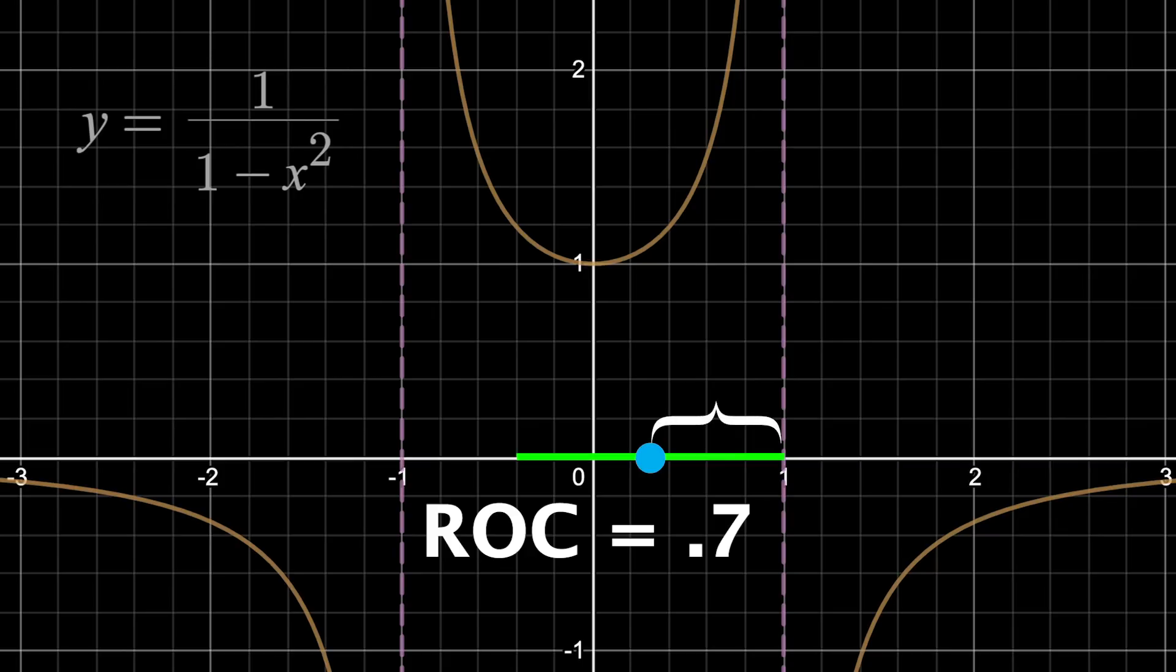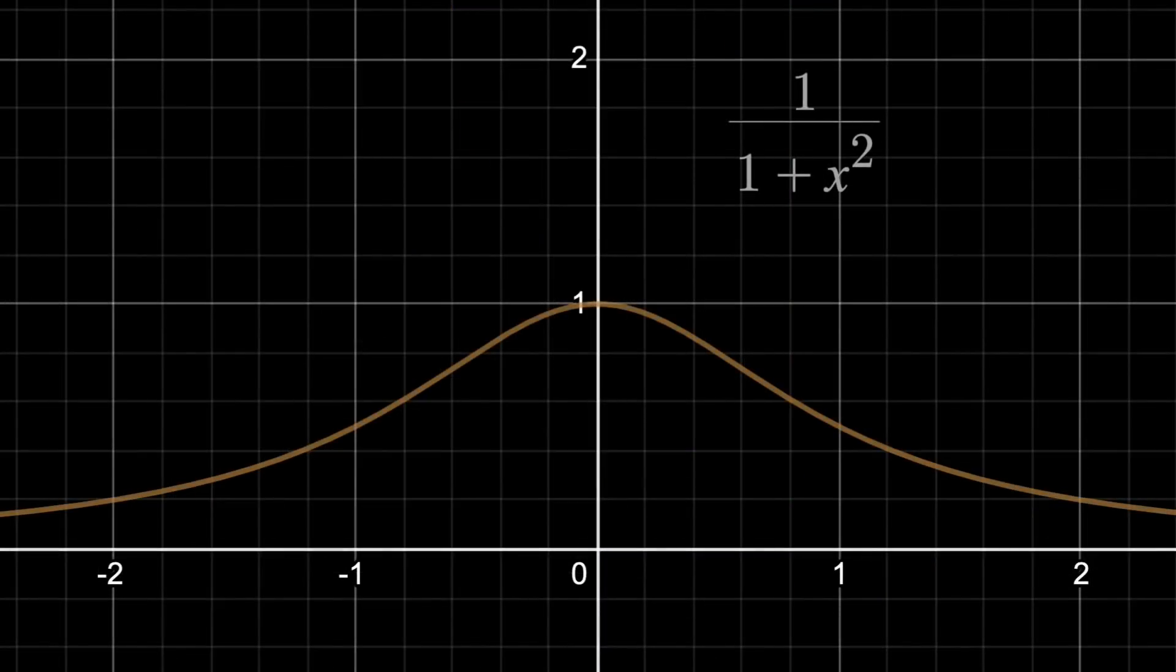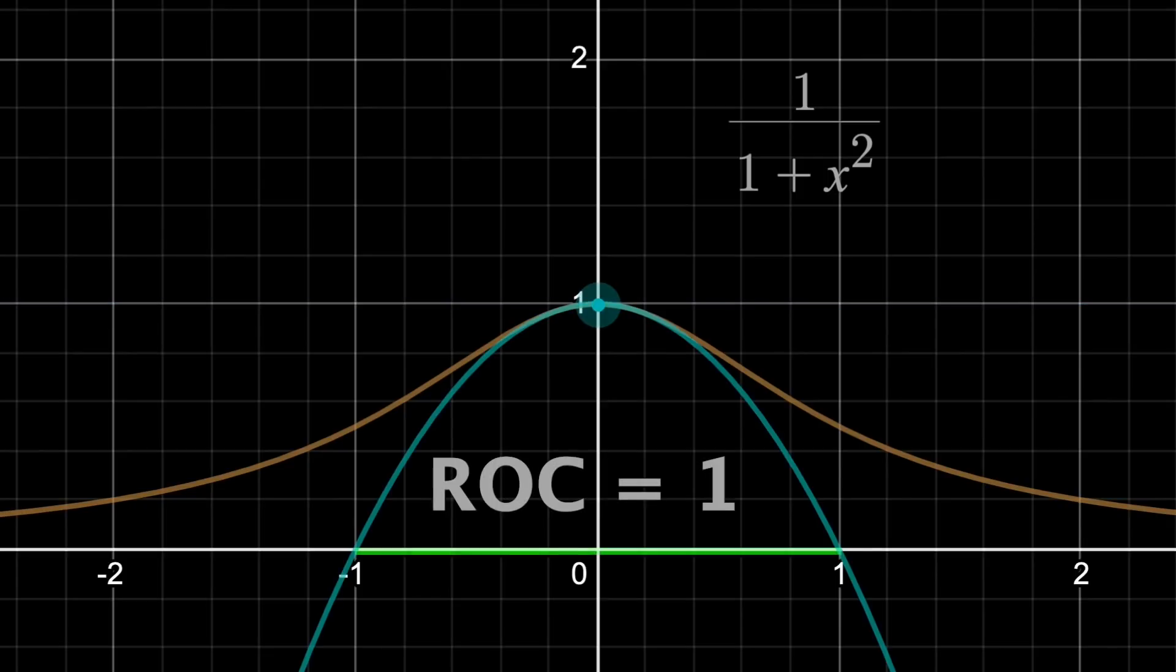So maybe that's it. Just move in both directions from your center point until you hit that first singularity. But this all seems to be ruined when you consider the function 1 over 1 plus x squared. This has no vertical asymptote. So, when centered at x equals 0, the McLauren series has a radius of convergence of 1.